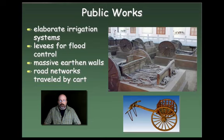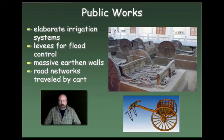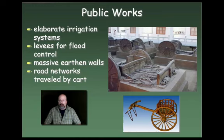They also built massive earthen walls around almost every one of their cities, and even today the Chinese still have lots of walls. Modern China is in the process of tearing down many of its walls, but Chinese cities are often characterized by walled compounds, walled houses, and walled cities designed for protection. They also had a road network and traveled by cart. The Chinese chariot was fairly simple but allowed them to transport goods and people over great distances with military applications as well. The maintenance of roads facilitated communication, travel, and trade.